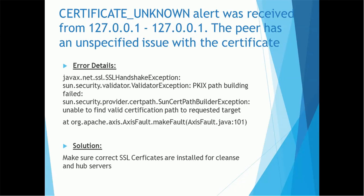The next error is: 'Certificate unknown alert was received from 127.0.0.1. The peer has an unspecified issue with the certificate.' This is an SSL handshake error, meaning SSL certificates are missing. You have to make sure the correct SSL certificates are installed for both the cleanse server and the hub server.